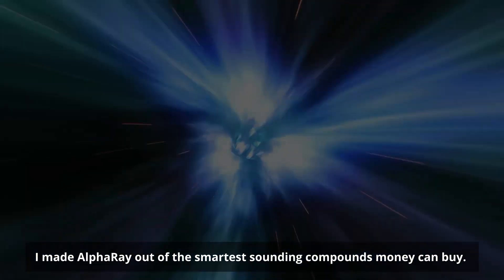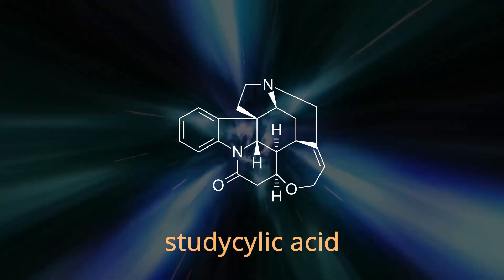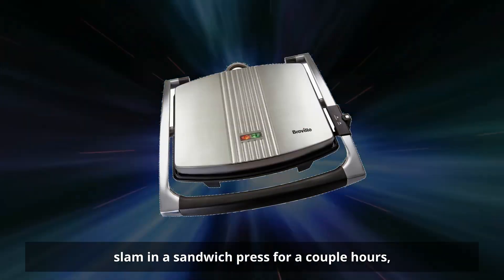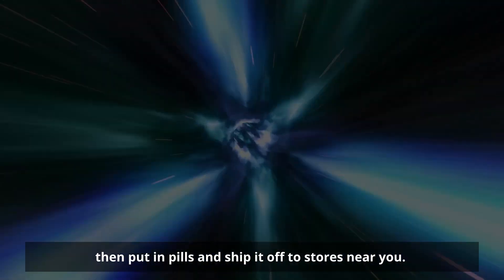I made AlphaRate out of the smartest sounding compounds money can buy. Think your likes: Steady silica acid, Alpha Sigma Theta Gamma. Then we grind it all down, put it in a big sock, find it in a sandwich press for a couple of hours, then put it in pills and ship it off to stores near you.